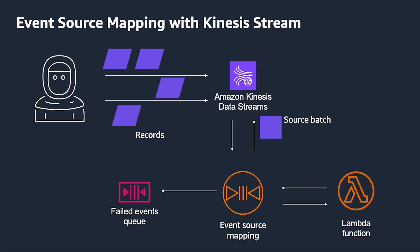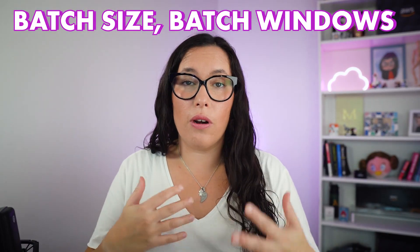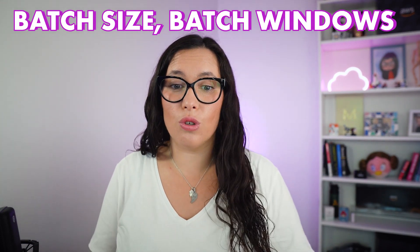Event source mapping fetches records from the shards of the stream in batches and sends them to the Lambda function. In this process, event source mapping takes care of handling the batch size, error handling, filtering events, and much more. We already talked about batch size and batch windows — these are variables that you can control when working with event source mapping, and they influence how fast you are going to invoke your function. The bigger the batch or the longer the time you're waiting, the more event source mapping will wait to invoke the function.